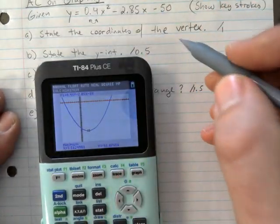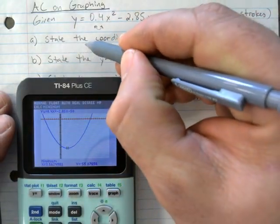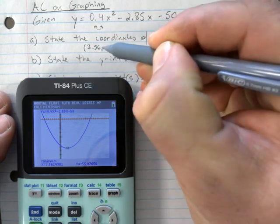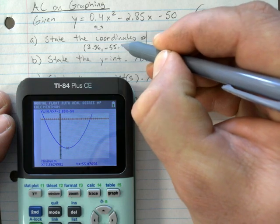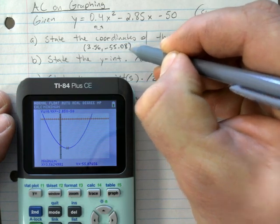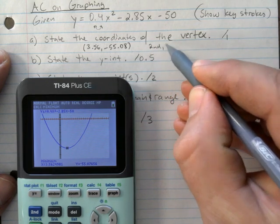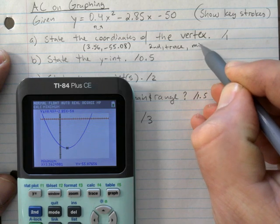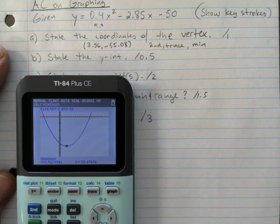So for a, let's see if I can fit that in here. That would be 3.56, negative 55.08. If you have that, you would get the marks today. But I would say second, trace, 3 or min would be something that I'll be looking for. Otherwise, you get a K error for keys missing.